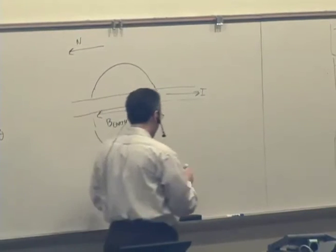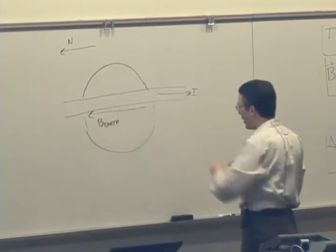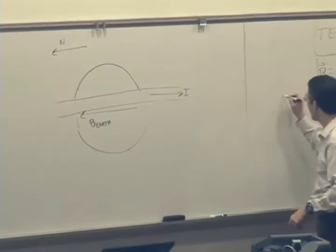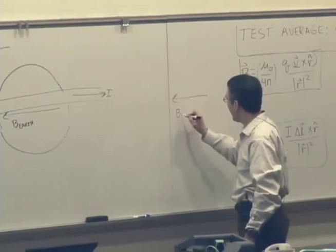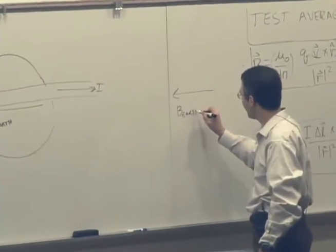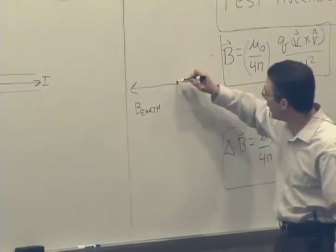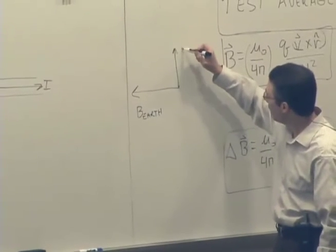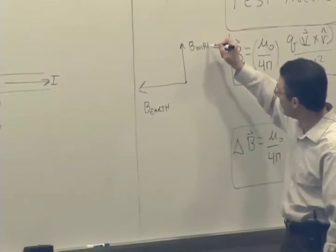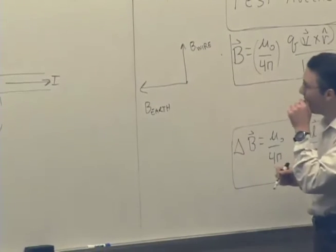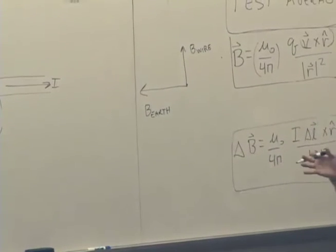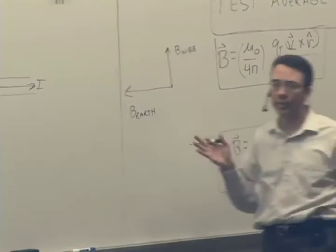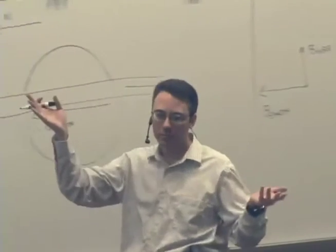So now I have the magnetic field of the Earth pointing in that direction. Let me redraw it over here. B of the Earth pointing in that direction. B of the wire pointing in that direction, underneath the wire. So when I add those two together, the net magnetic field should point in a direction close to 8, right?